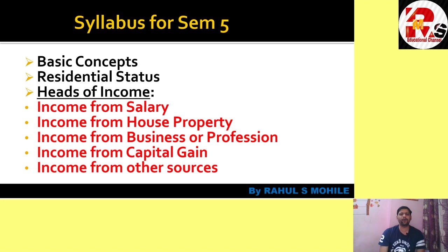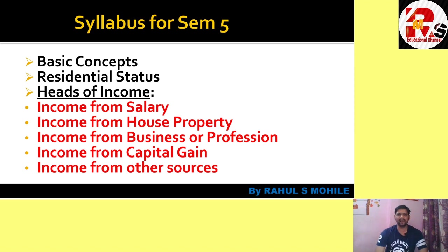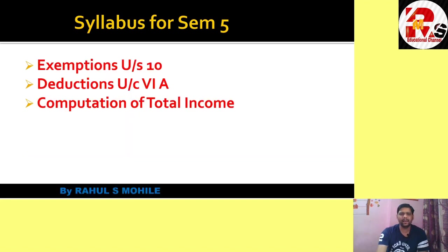This is the syllabus for Semester 5. The syllabus is very vast for direct tax. We have basic concepts, the chapter of residential status, five heads of income, and income from other sources. The next parts are exemptions under Section 10, deductions under Chapter 6, and finally the computation of total income, which ties all other chapters together.